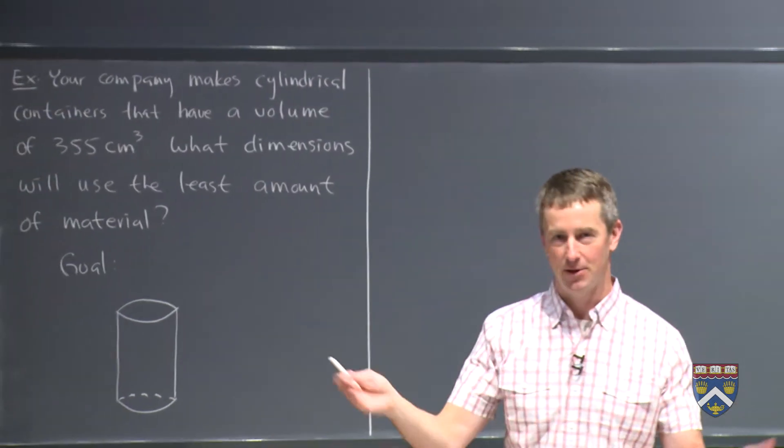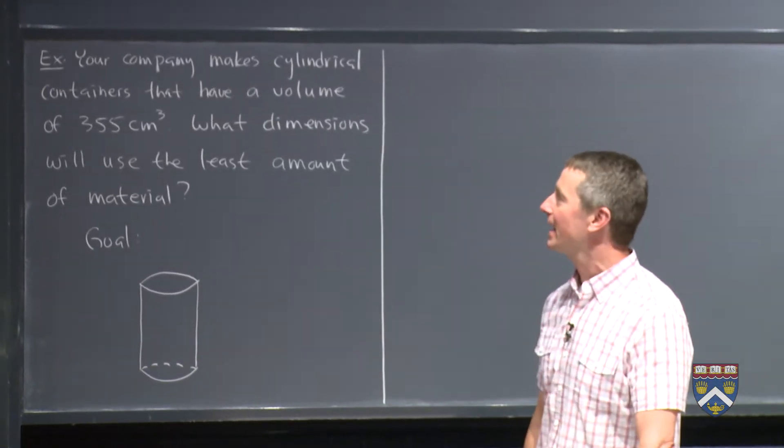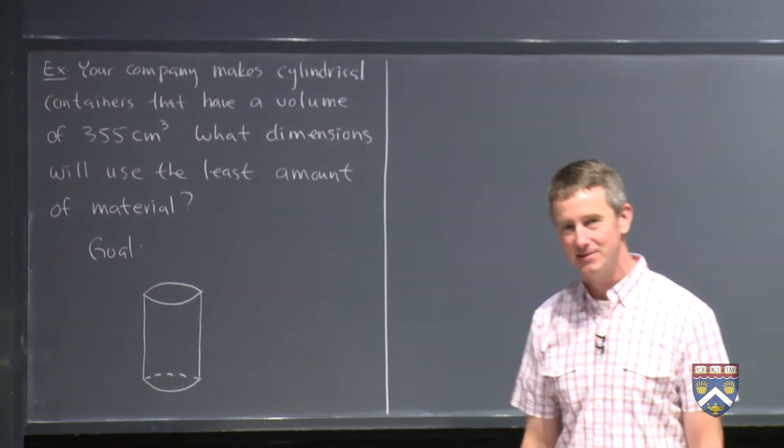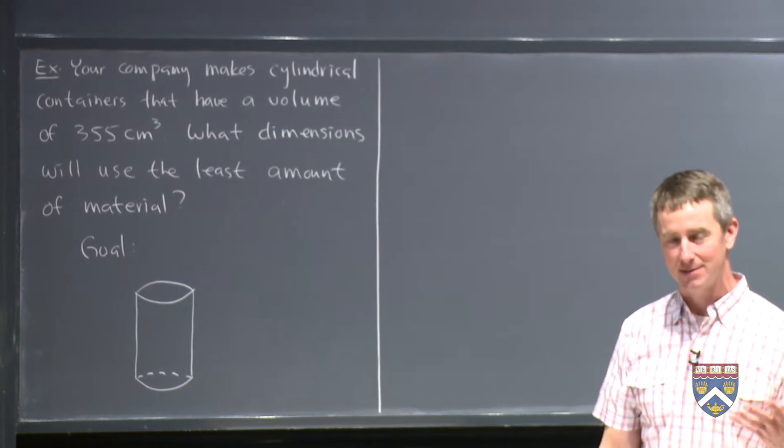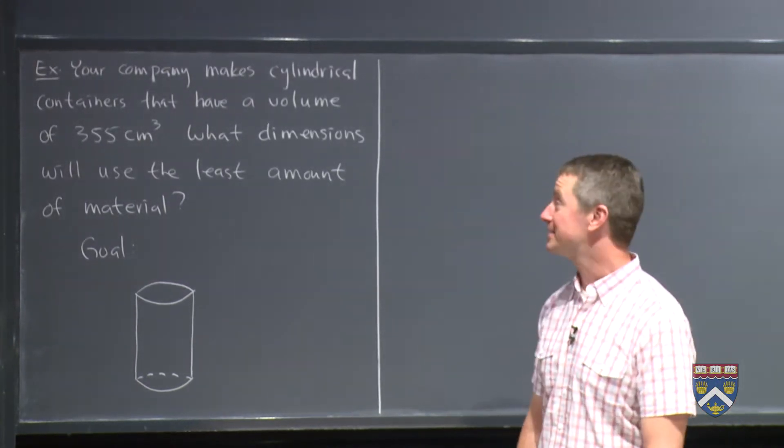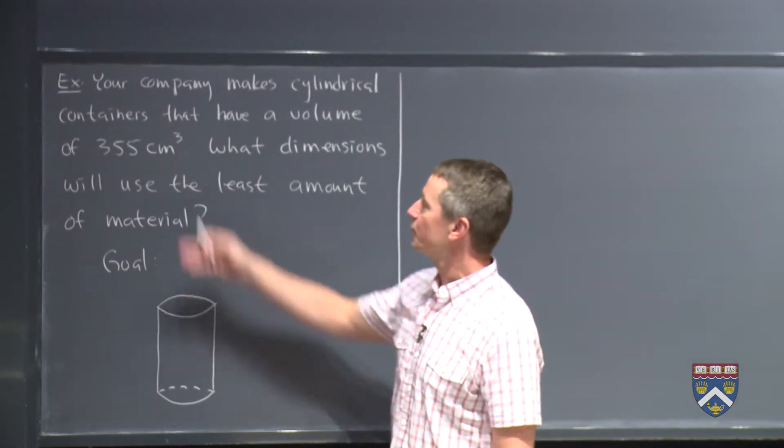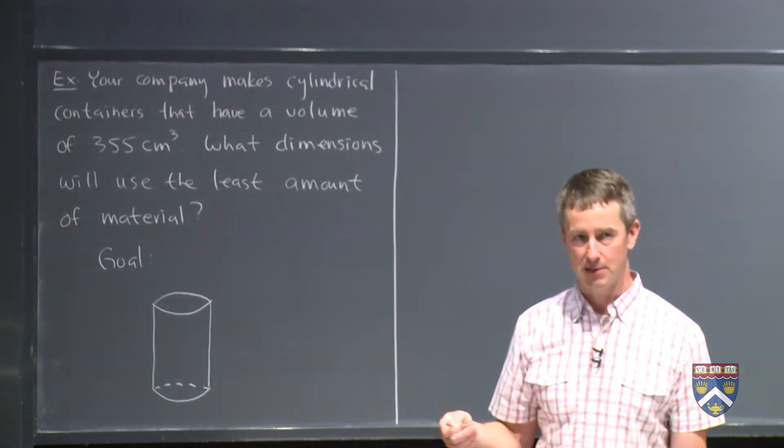So there used to be a company called American Can, maybe there still is, it was a big bidding war for it I remember back in the 80s. And if you are making millions and millions of these cans for vegetables or whatever it is, if you can make them a little bit more efficient, obviously that can save your company a lot of money and maybe even do something good for the planet by not wasting material. So cylindrical cans that have a volume of 355 cubic centimeters, what dimensions will use the least amount of material?